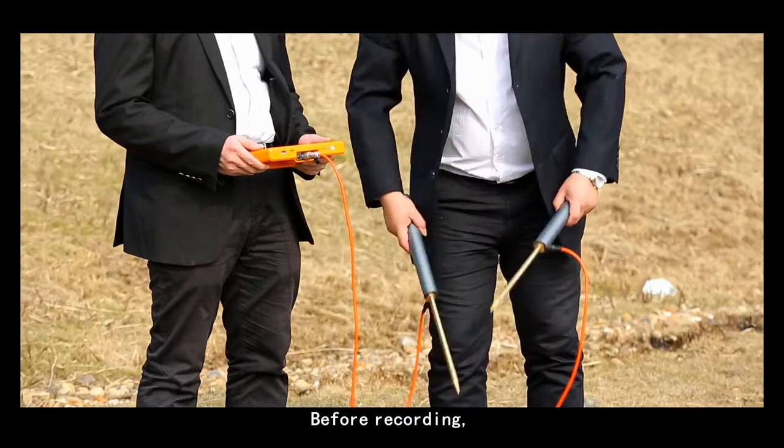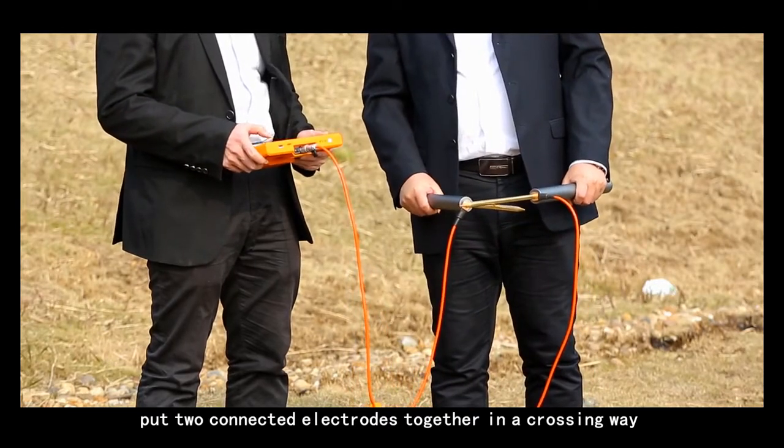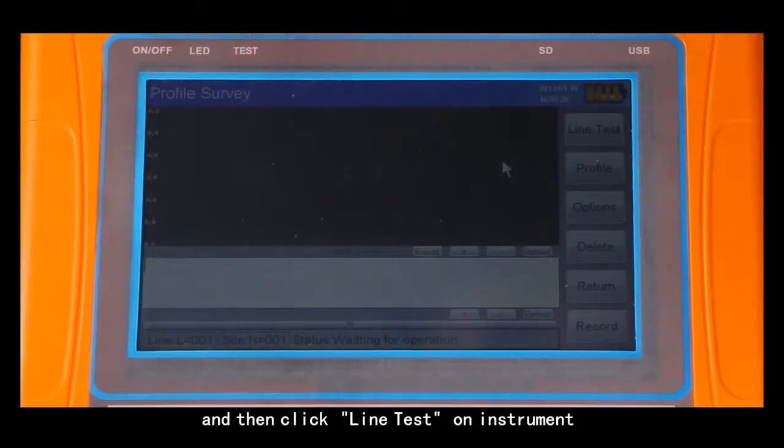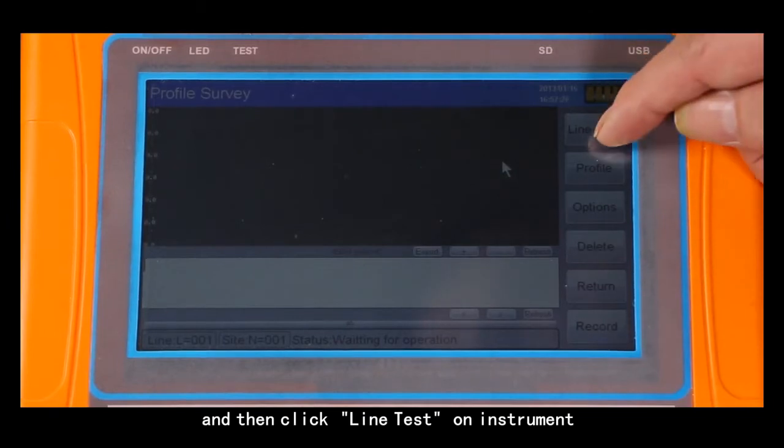Before recording, put two connected electrodes together in a crossing way, and then click line test on instrument. The green light on means the line is normal.